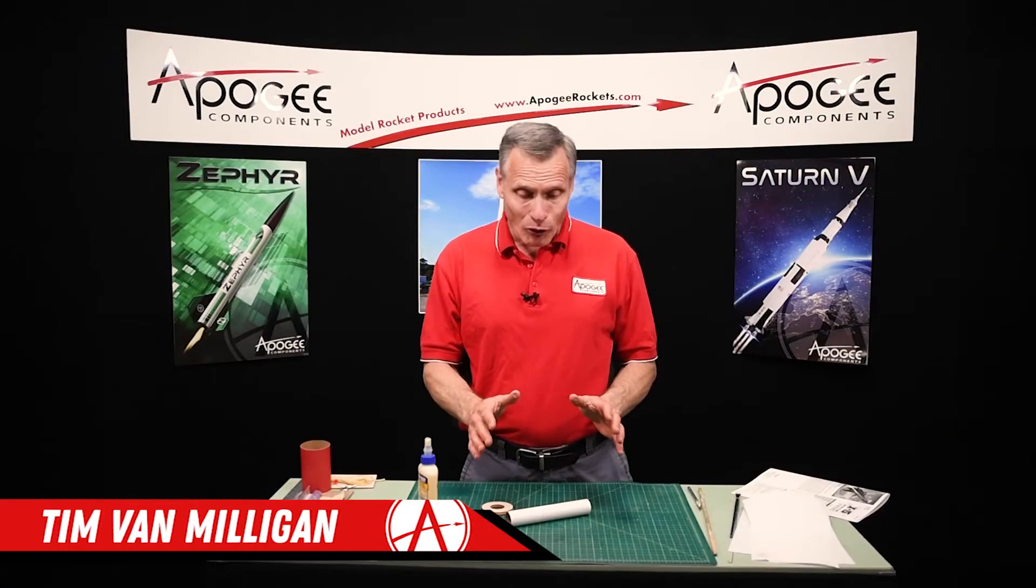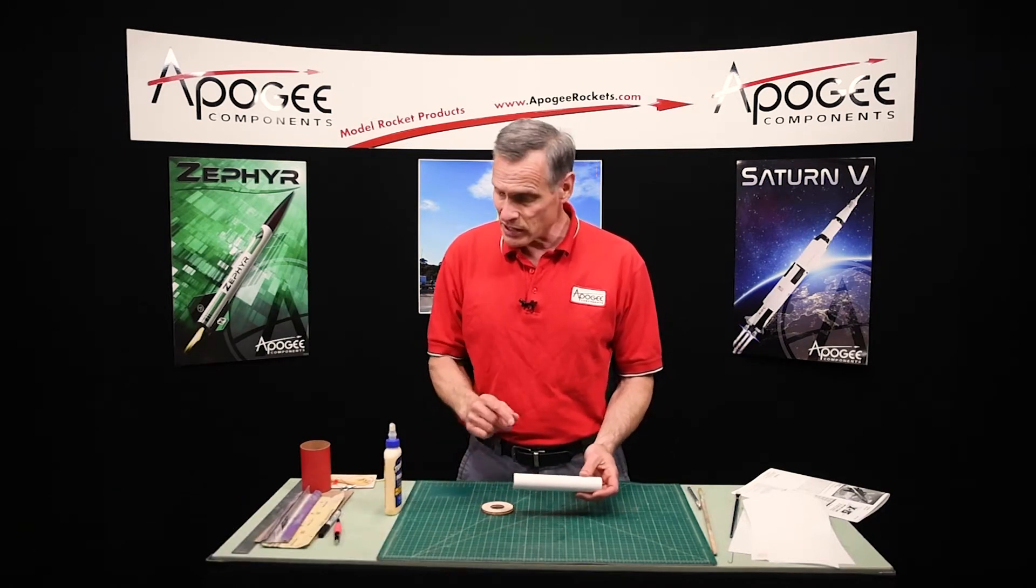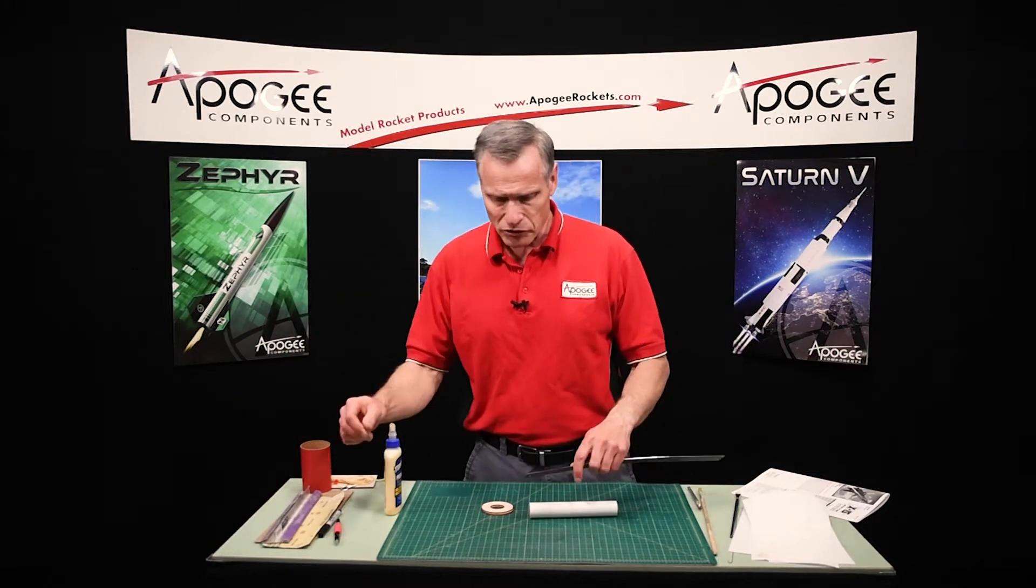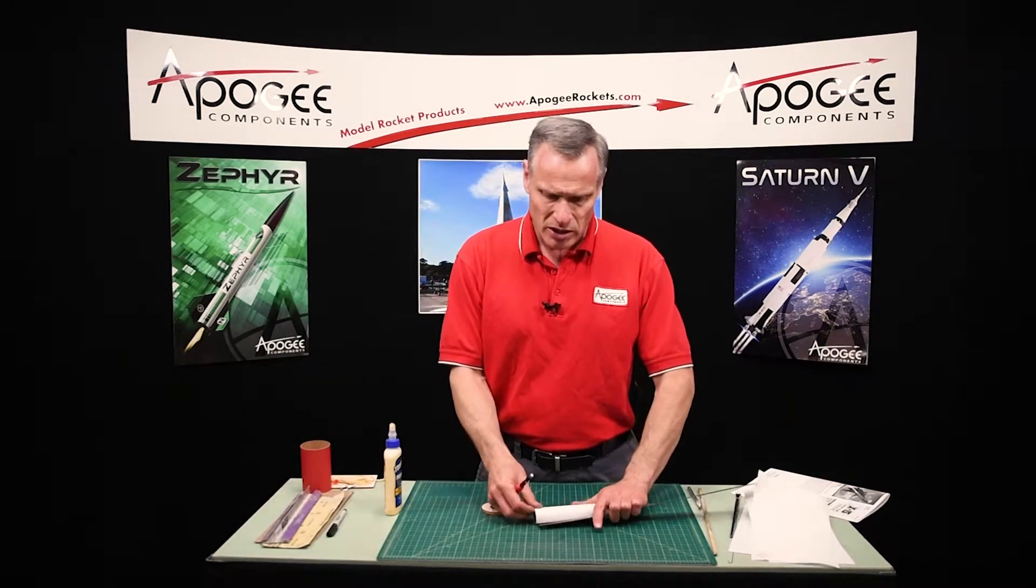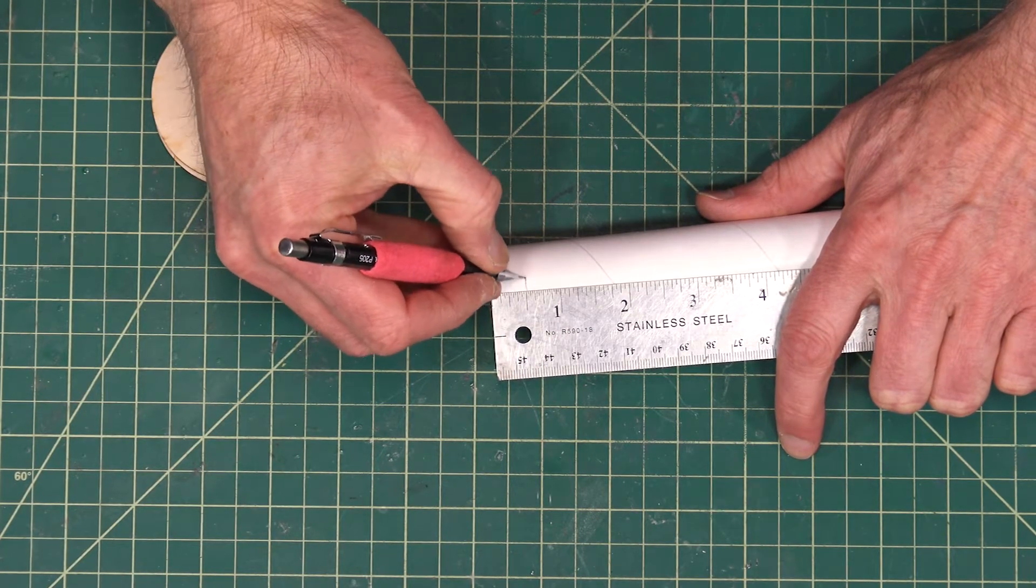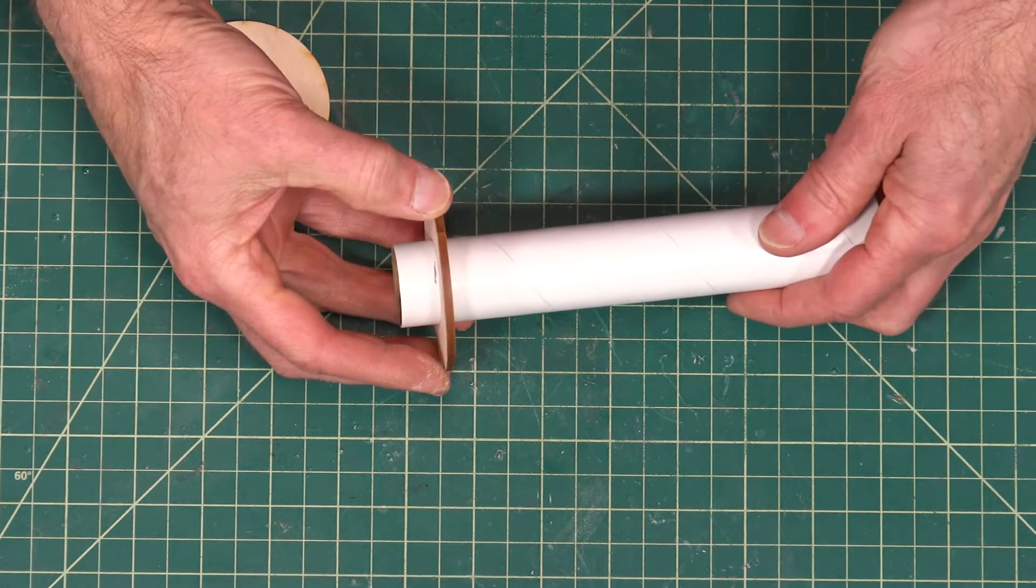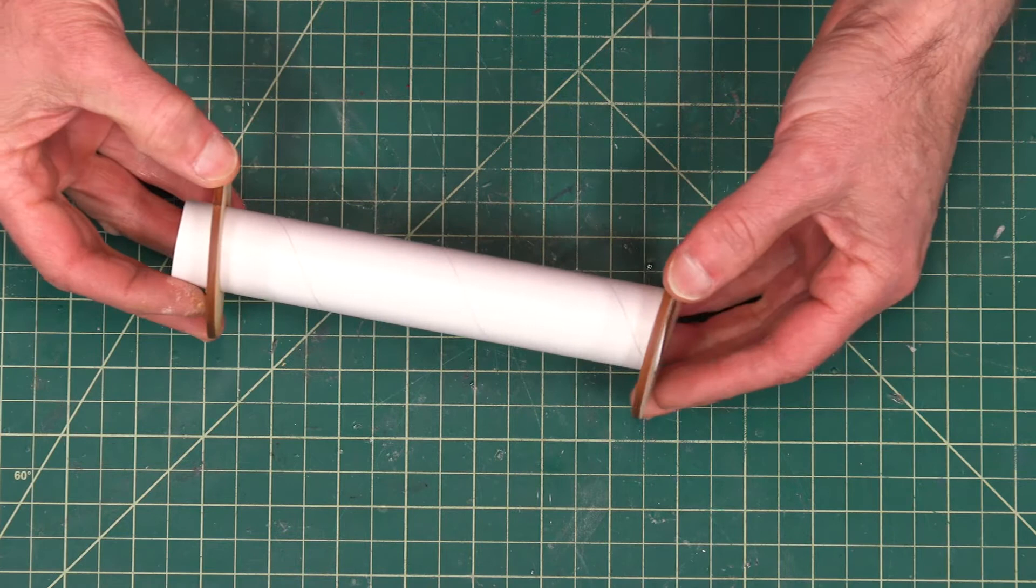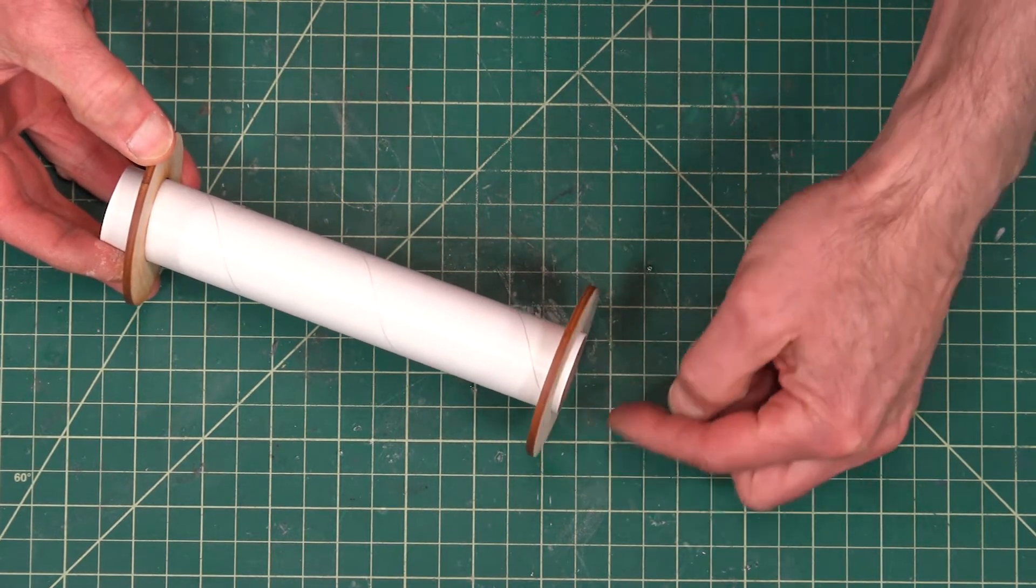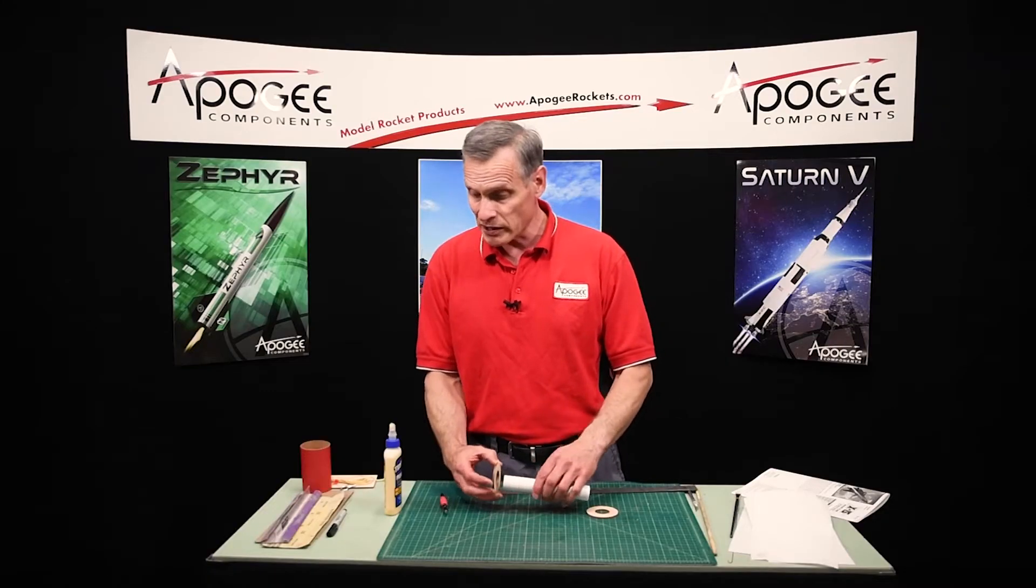This is step four in the construction of the X-15, and this is where we're going to glue the centering rings on the engine mount tube. We're going to put the back ring on first, and the back ring is approximately one half of an inch from the end of the tube, right about there. So that one's going to be glued on here, and then the front one is going to be glued flush. You don't have to make it flush. You can leave a little bit of room for a fillet if you want to. That's perfectly fine. It's not that critical.